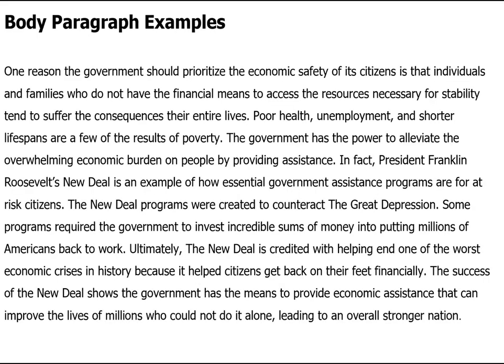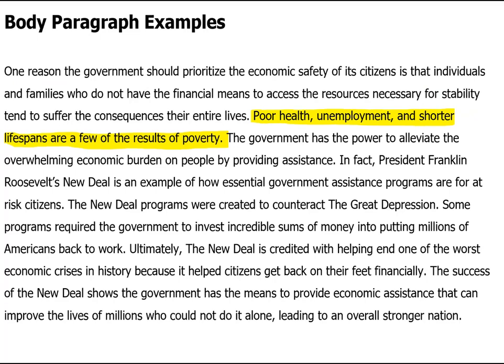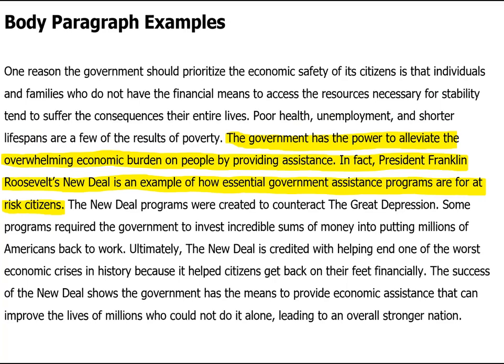Go ahead and pause the video here, take a moment to read through this body paragraph example, and as you read, consider how this one handles claims and support. Pay attention to how those claims are developed through the supporting evidence. This is a strong body paragraph — a higher scoring essay, something like a five or even a six. It begins with a clear topic sentence. The second sentence further explains the consequences mentioned in the first. The third sentence claims that the government has the power to ease the economic burdens on its citizens, which leads immediately into the example of Roosevelt's New Deal as supporting evidence.